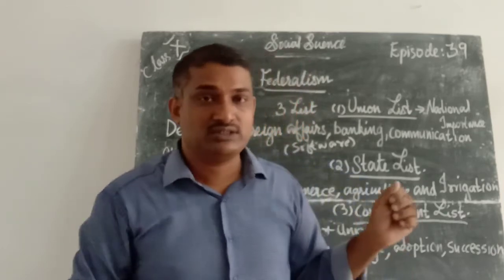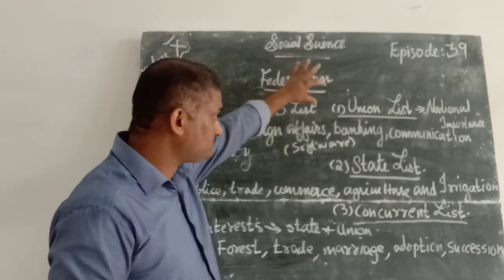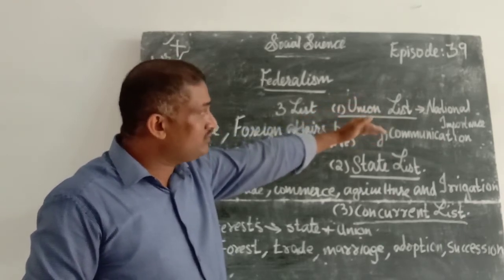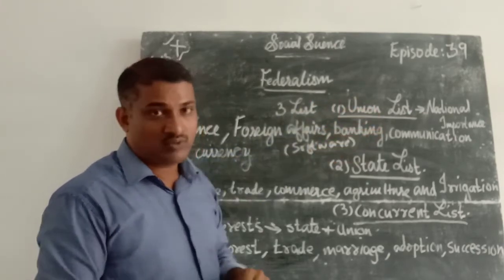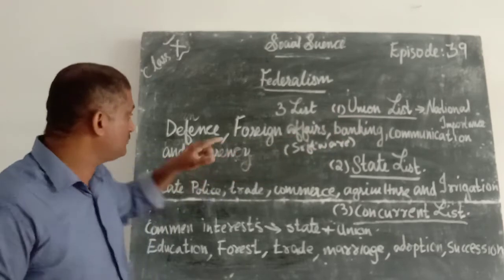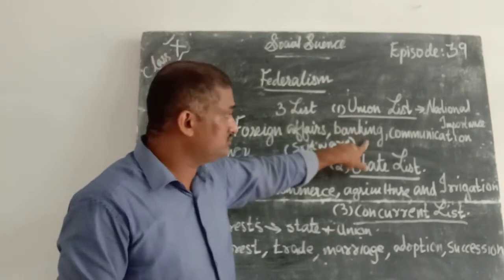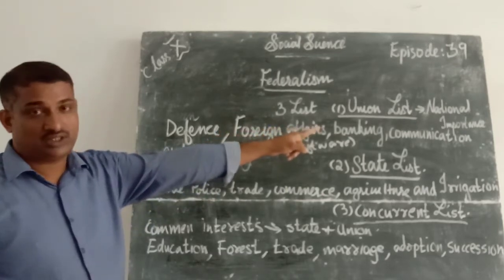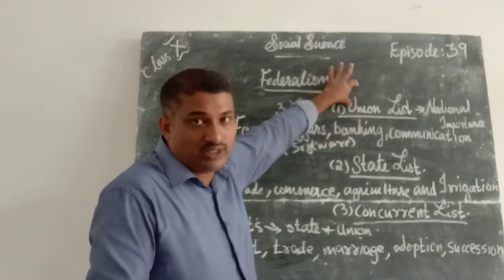Once again, I want to list out the union list. Union List mainly focuses on national importance. What are the sectors under national importance? Defense, foreign affairs, banking, communication, and currency. These are all giving importance to national importance and come under the Union List.